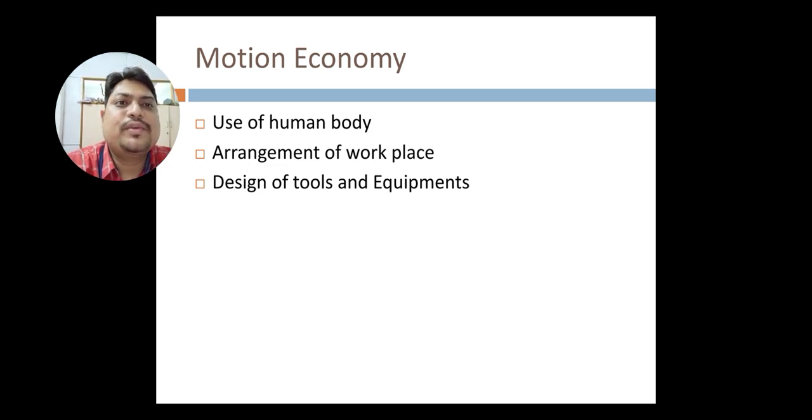Then design of tools and equipment. Generally the work which we are carrying out, for that particular kind of equipments are needed. That kind of equipments are required and in that equipment, the related tools are required. Suppose for example, for threading operation, you cannot use the turning tool for doing the threading. For threading, you need a separate kind of threading tool.